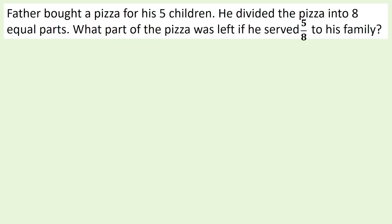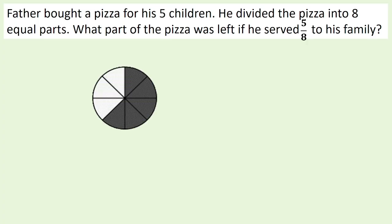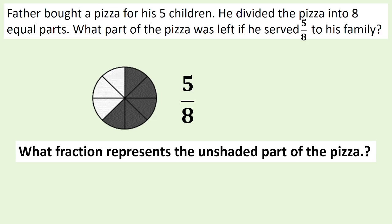Father bought a pizza for his five children. He divided the pizza into eight equal parts. What part of the pizza was left if he served five-eighths to his family? We have five-eighths. What fraction represents the unshaded part of the pizza? Answer: three-eighths.